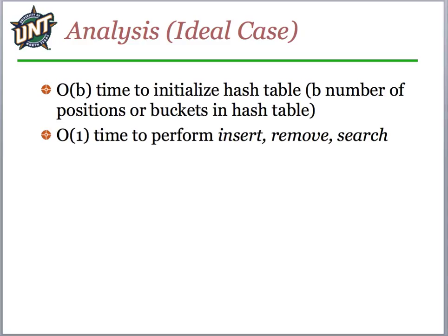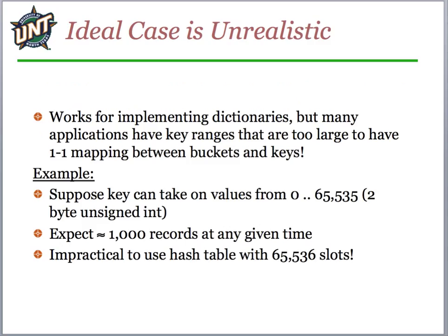The initialization cost is order B, where B is the number of buckets, because we have to create that many positions. Then it's order one to do any operations — inserting, removing, or searching — which is as good as it gets. But this is the ideal case and it's unrealistic because we're wasting a lot of space. If we have a one-to-one mapping and the key could go from zero to the full size of a two-byte unsigned integer, we'd have 65,000 possible locations. If we only expect a thousand records, we're wasting a huge number of slots.